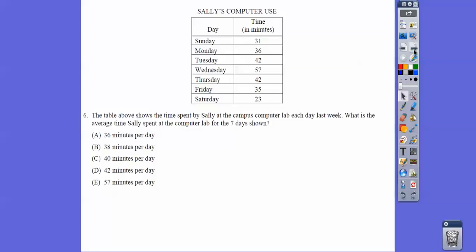All right, the table above shows the time spent by Sally at the campus computer lab each day last week. What is the average time she spent at the computer? Average is we're going to add all these up and divide by the number of numbers. There's 7 numbers, so we get choice B.